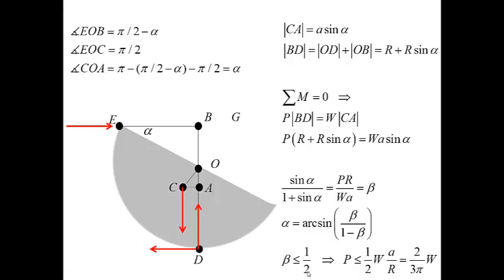If beta is larger than 1.5, which means if the force P is large, then the semicircle will flip and we will not have static equilibrium.